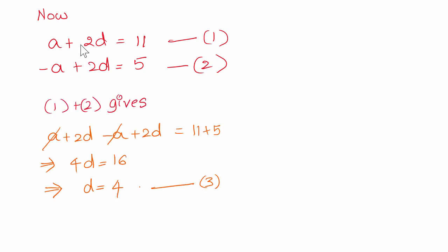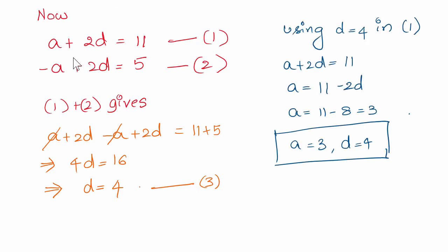You add the equations. a cancels. 2d plus 2d is 4d. 11 plus 5 is 16. So, 4d equals 16 or d equals 4. Here we get common difference d equals 4.